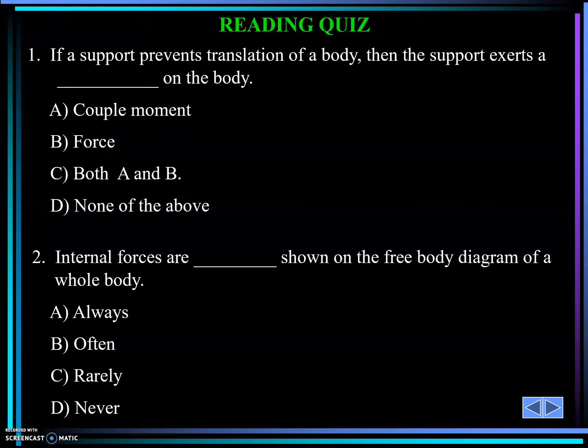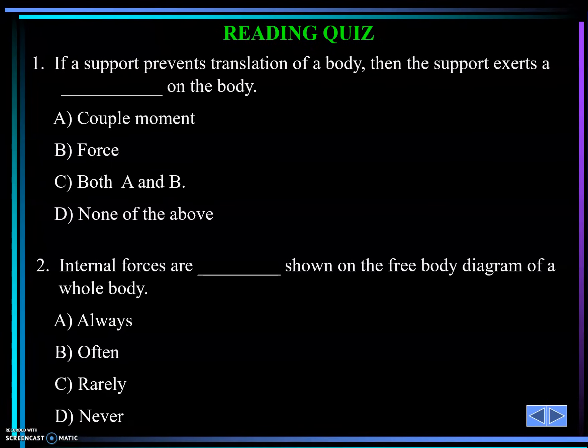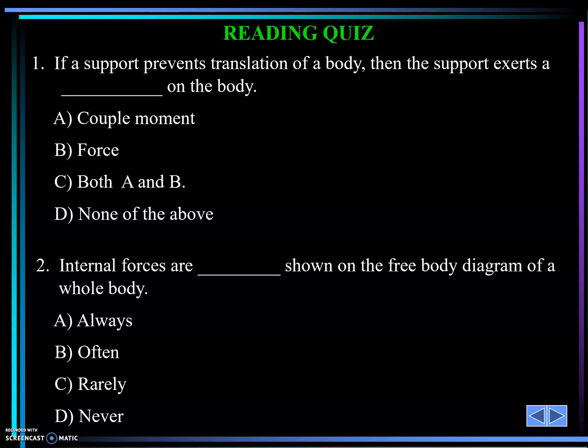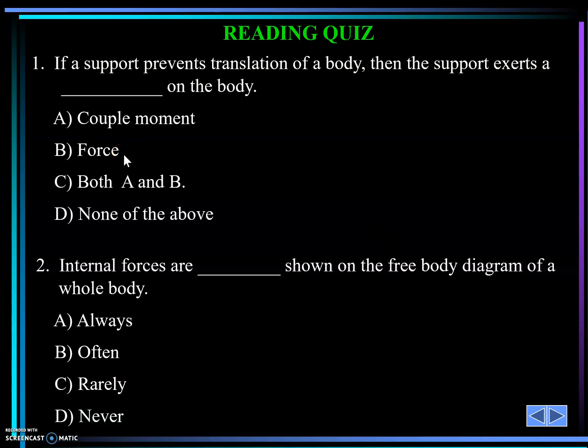Before I get started, I want to quiz you and find out where we stand as far as understanding some concepts. If a support prevents translation of a body, then the support is exerting what on the body? Number A: couple or moment; number B: force; number C: couple and force; or number D: none of the above. My answer — if the support prevents translation, then the answer is B: it is going to develop a force.